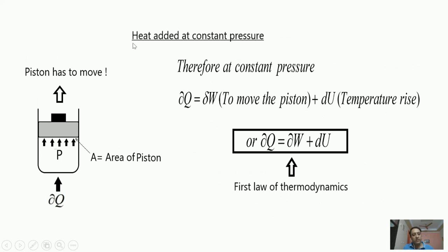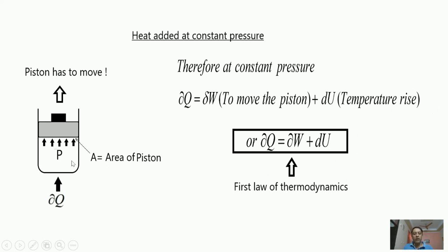Now the first law of thermodynamics is very clear. If we add heat dQ to any system at constant pressure, some part of heat is used to move the piston — that is the work done dW — and the rest raises the internal energy dU, which is responsible for temperature rise. Therefore: dQ = dW + dU. This is the first law of thermodynamics.